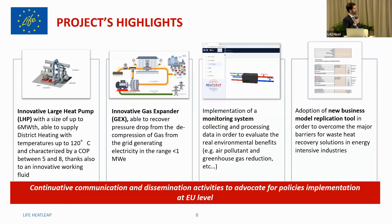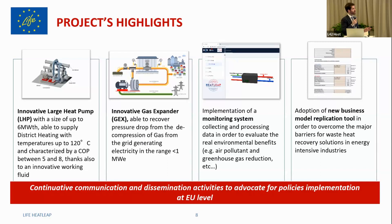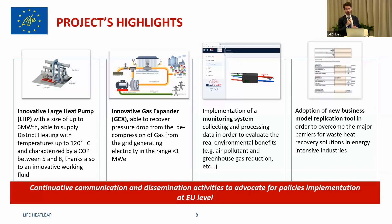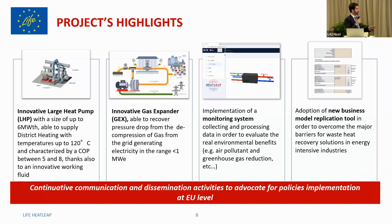Now moving quickly into the project highlights — there are four main pillars. The first is an innovative large heat pump: a 6 MW thermal large heat pump capable of supplying district heating in the city of Brescia, with temperatures up to 120 degrees and a coefficient of performance (COP) ranging from five to eight. More details will follow from my colleague.